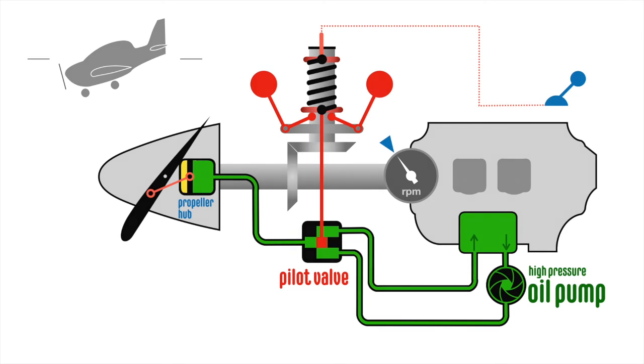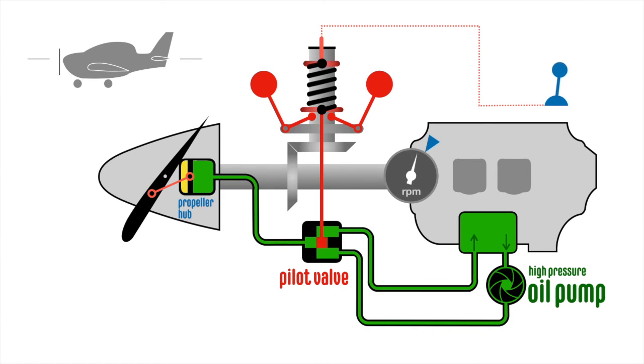With the propeller pitch control set forward, the pilot requests a higher target RPM. But if the aeroplane pitches up for example, the propeller wants to slow down, thus the RPM wants to decrease.